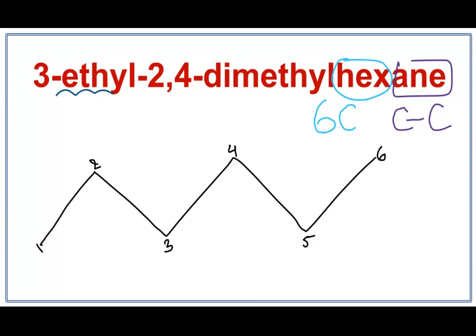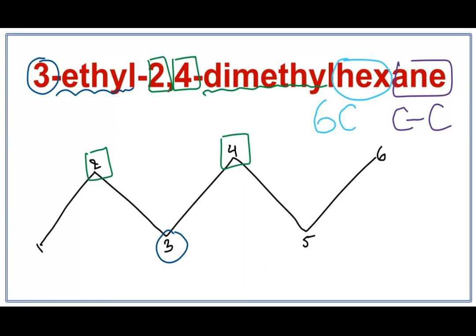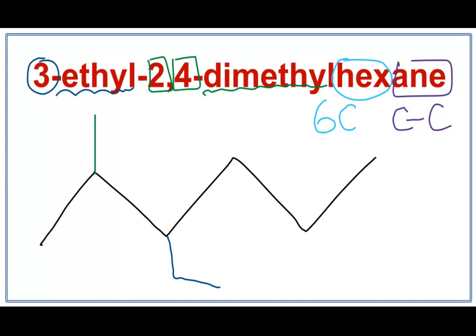We have an ethyl attached on the third carbon. We have dimethyl on the second and on the fourth carbon. Let's get rid of these numbers and attach the ethyl on the third carbon and the dimethyl on the second and fourth carbons. On the third carbon: ethyl. On the second carbon: a methyl. On the fourth carbon: a methyl. This is the structure for 3-ethyl-2,4-dimethylhexane.